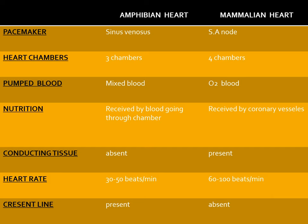Before we go into detail, let's see the difference between amphibian heart and mammalian heart. In amphibian heart, the pacemaker is sinus venosus, whereas in mammalian heart the pacemaker is the sinoatrial node. The pacemaker is the structure which generates impulses. In amphibian heart there are three chambers — two atria and one ventricle — whereas in mammalian heart there are four chambers. In amphibian heart, the blood pumped is mixed blood; in mammalian heart it is oxygenated blood from the left ventricle. In amphibian heart, nutrition is received by blood going through the chamber, whereas in mammalian heart it is received by coronary vessels, which are absent in amphibian heart.